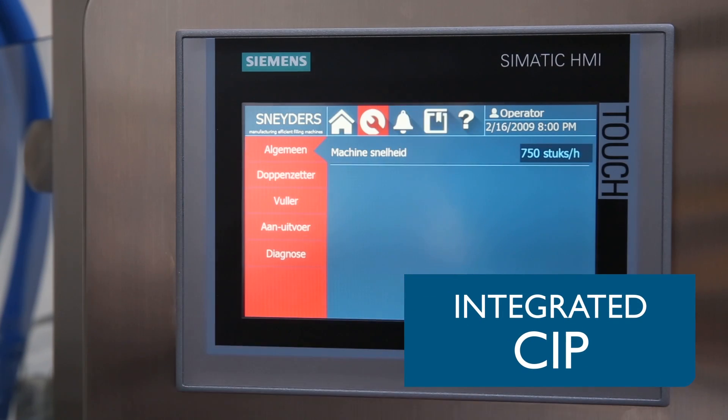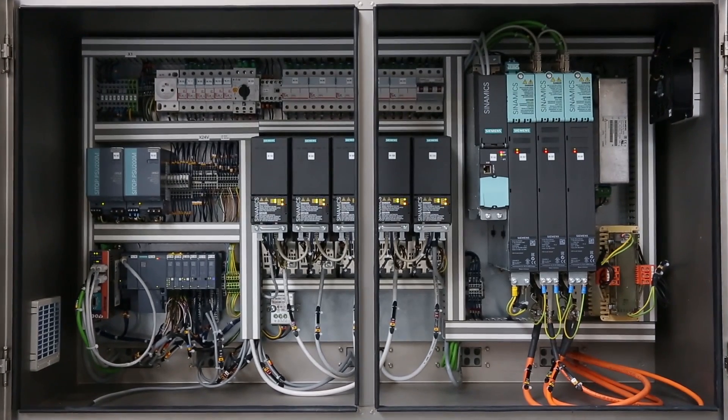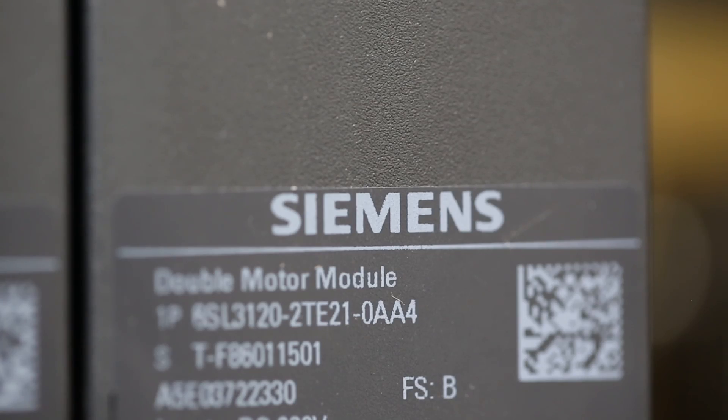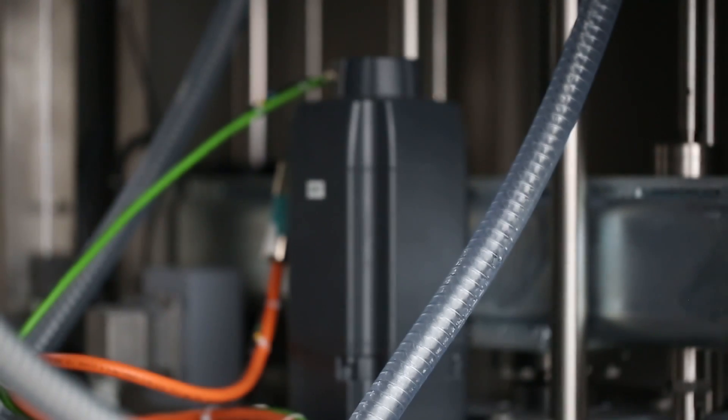Operators receive instructions from the operator panel for the CIP. All drives, motors, PLC, and operator panels are sourced from Siemens to ease the communication between the heart, the brains, and nervous system of the machine.